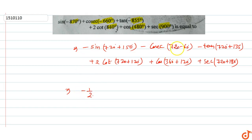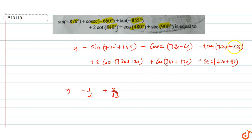For -cosec(720° - 60°) = -cosec(-60°) = cosec(60°) = 2/√3. Then -tan(720° + 135°) = -tan(135°) = -(-1) = 1.